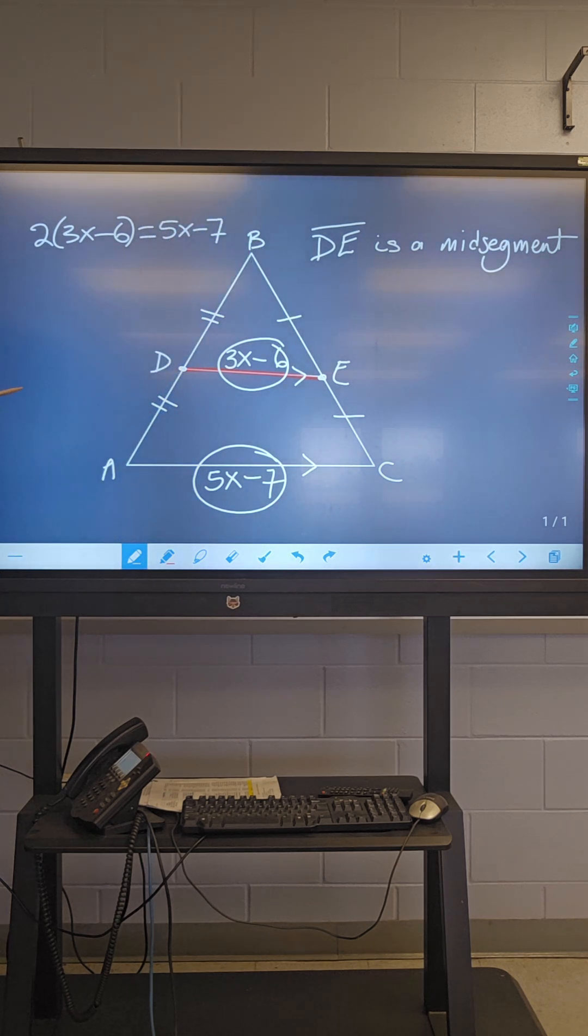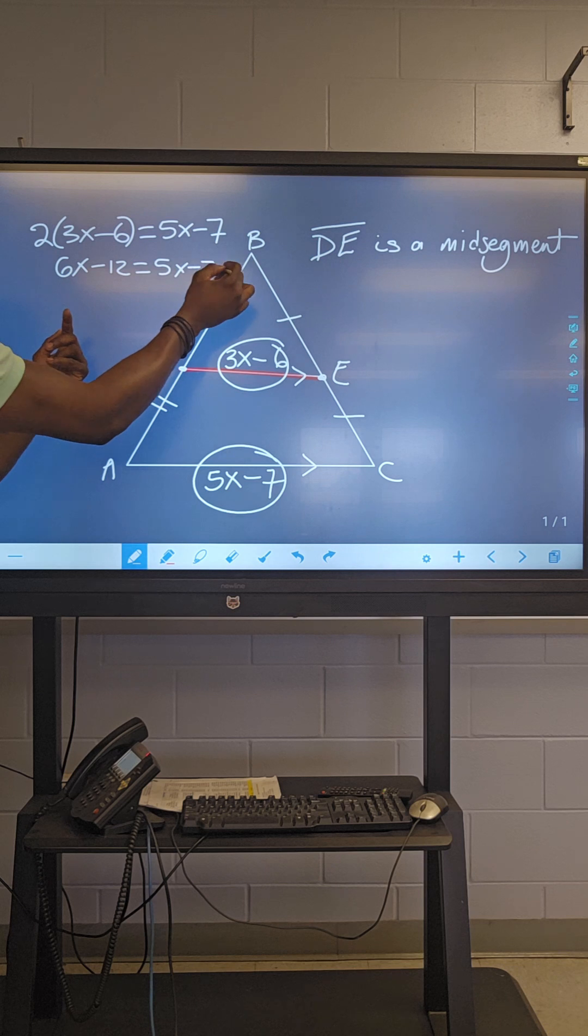And from that, if we distribute, this is 6X minus 12, which is equal to 5X minus seven.